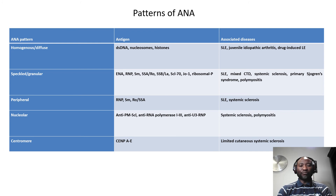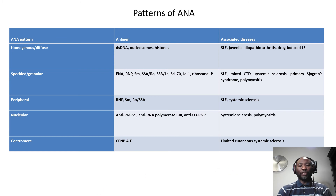Although nonspecific, the patterns can be interesting in that certain disease states can come to mind. Homogenous can be found in lupus or drug-induced lupus. Speckled can be seen in mixed connective tissue disease or Sjögren's. Peripheral can sometimes be seen in lupus or systemic sclerosis. But the centromere pattern is highly related to limited cutaneous systemic sclerosis — this tends to be the most specific of all the patterns, hence the reason why patterns are still somewhat important.